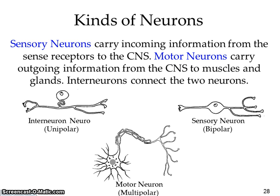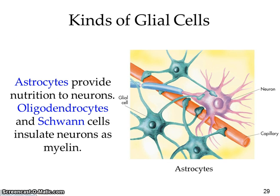Interneurons connect the two neurons. Glia cells are something that helps with the nutrition of your neurons.